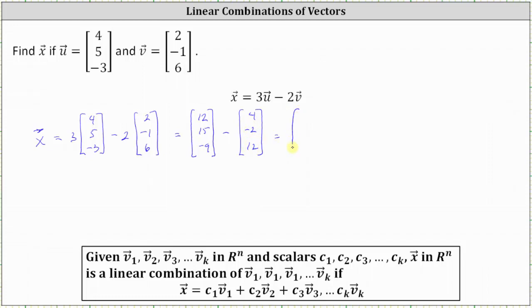Which means vector x has components 12 minus four, 15 minus negative two, and negative nine minus 12. Simplifying, the components of vector x are eight, 17, and negative 21.